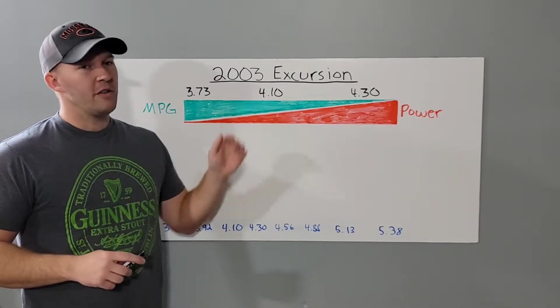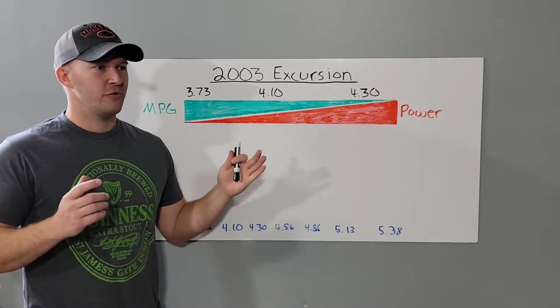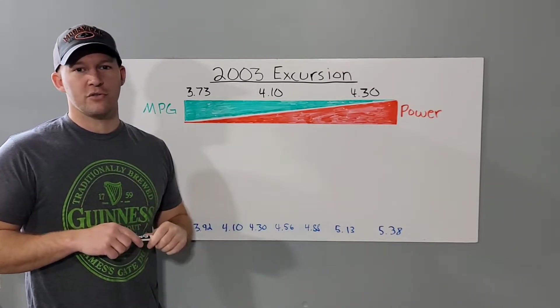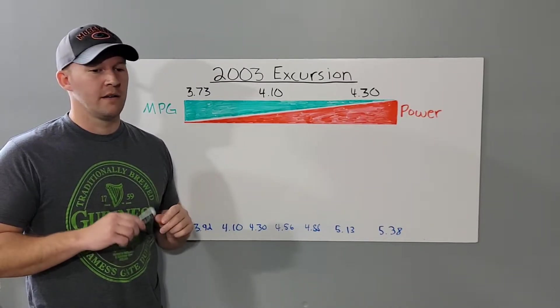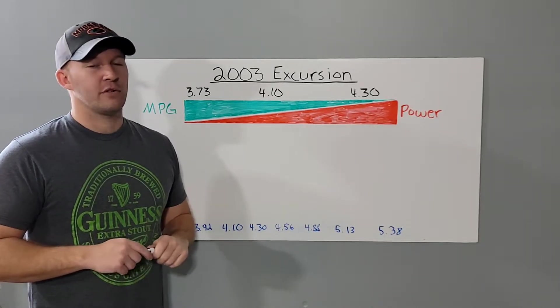In order to find out what your vehicle came with from the factory, there will be an information card usually on the inside of your driver's door jamb or inside your glove box. It will have an axle code and then you can look up the axle code from there.